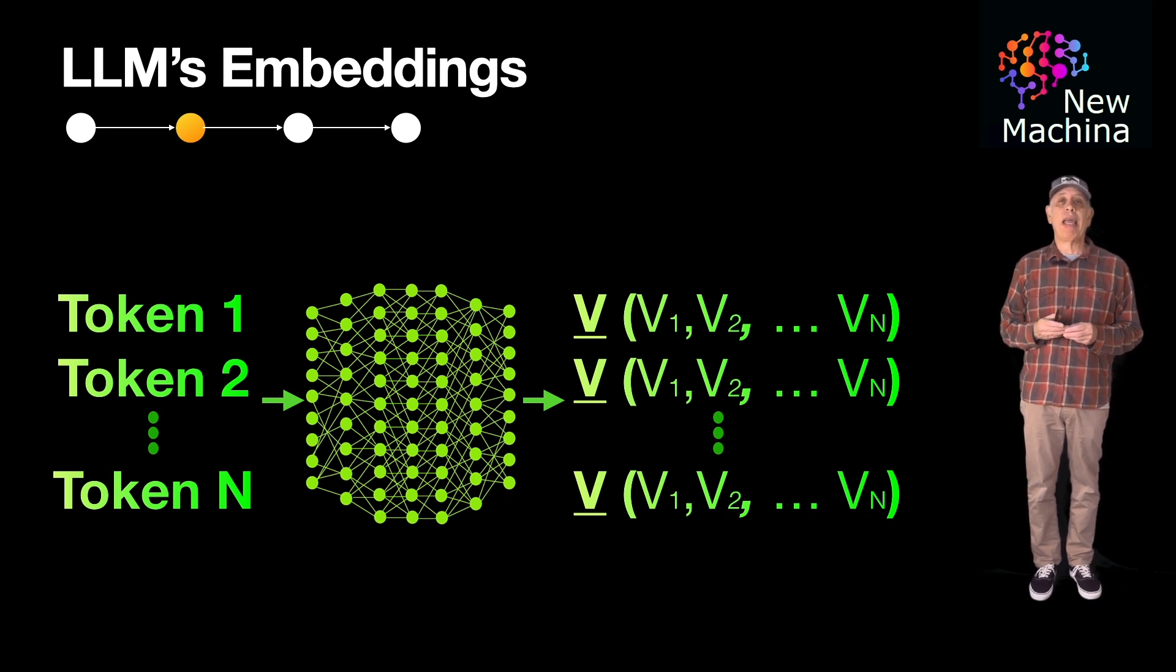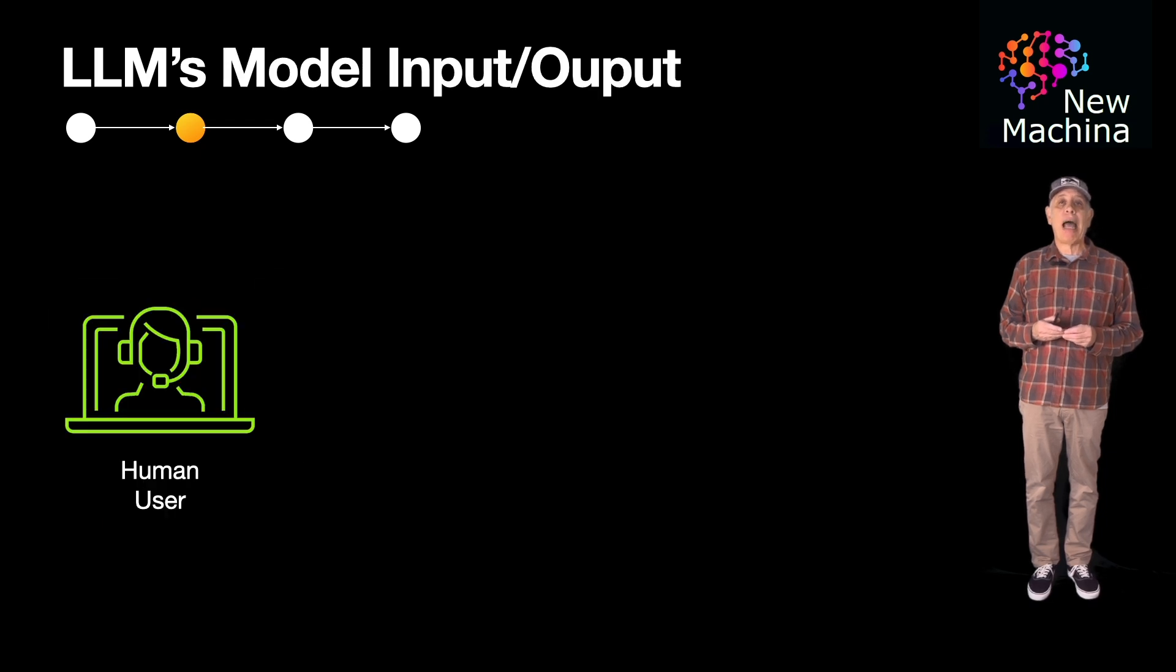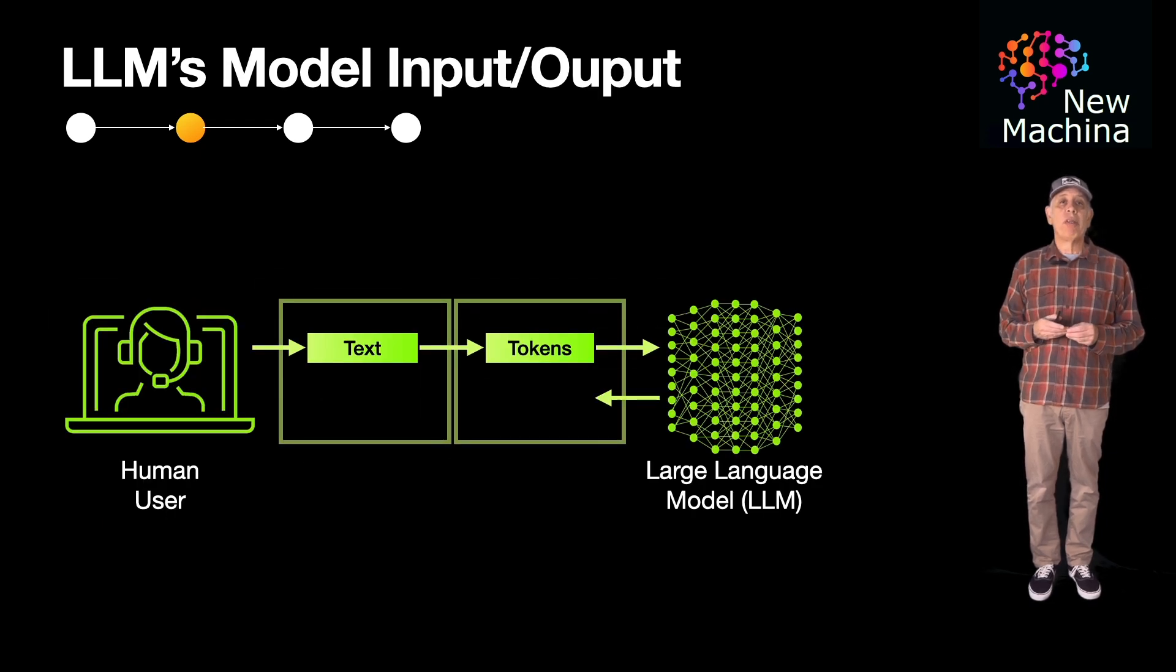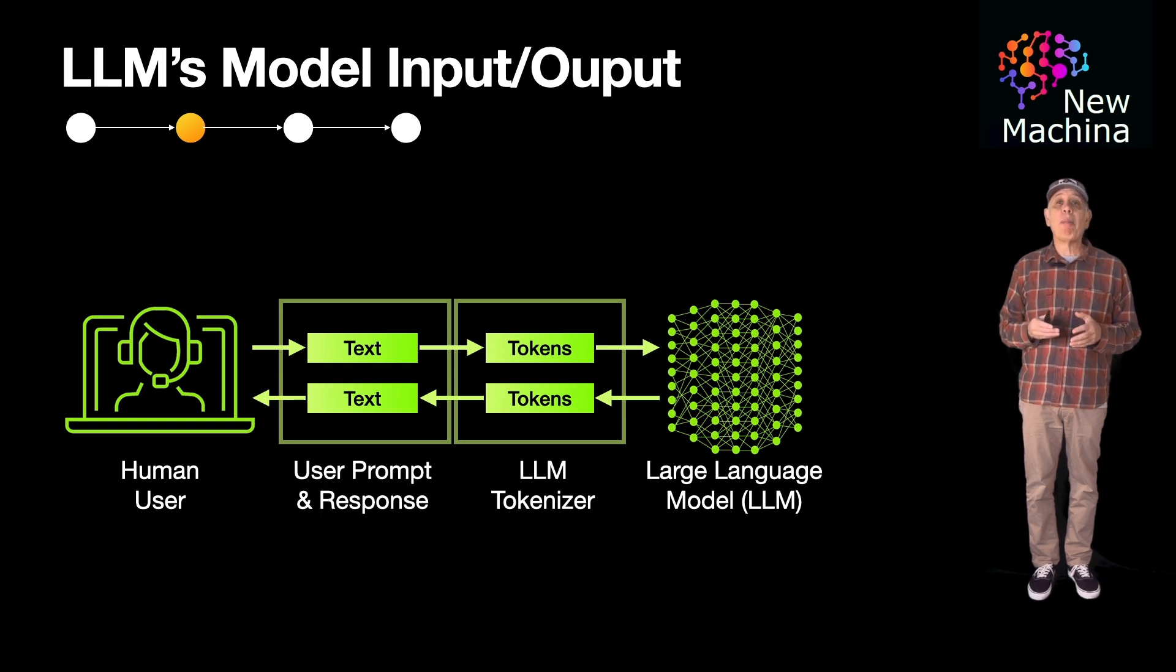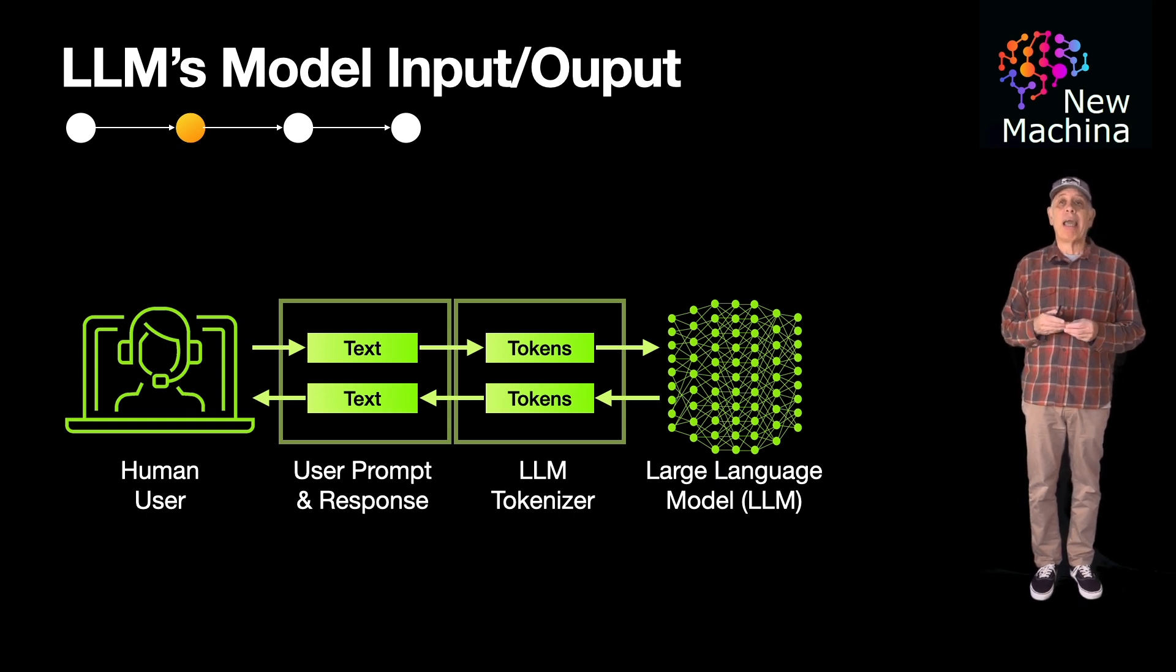So now moving to the next way LLMs use vectors, what do we mean by LLM input-output operation? Well this is one example you are probably already familiar with. If you have used a chat client to interact with an LLM, such as ChatGPT for example, the chat interactions with the LLM are exactly what we mean by LLM model input-output operation.